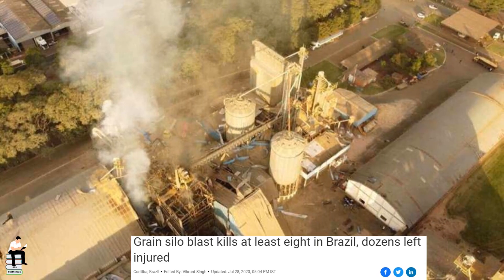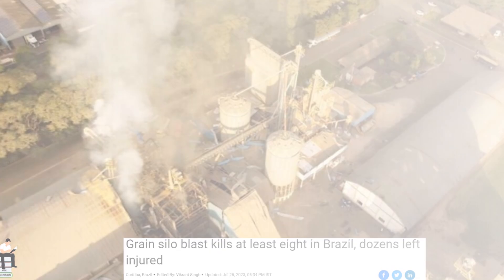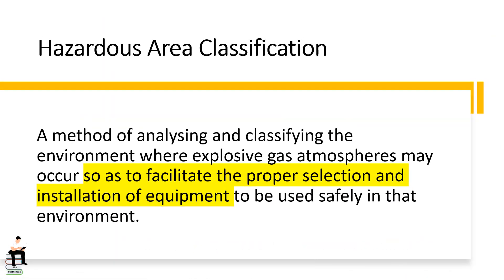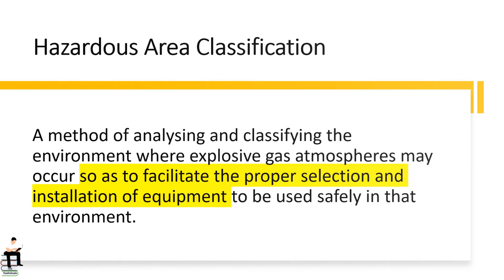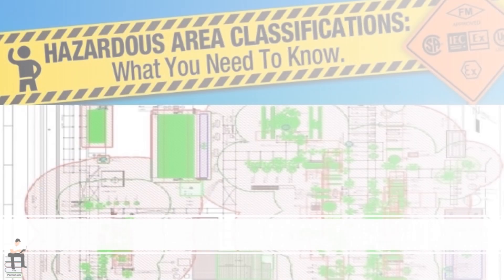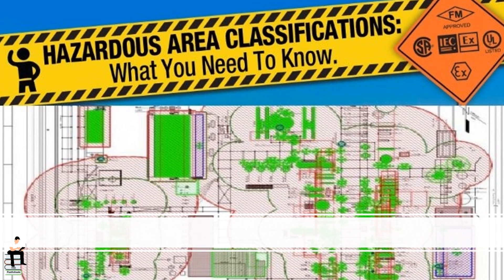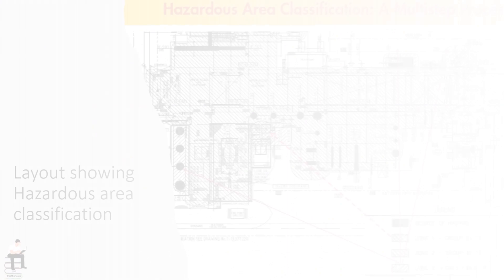Let's start with basics and understand hazardous area classification. It is a method of analyzing and classifying the environment where explosive gas atmospheres may occur. This helps in the proper selection and installation of equipment that does not pose a fire or explosion risk.